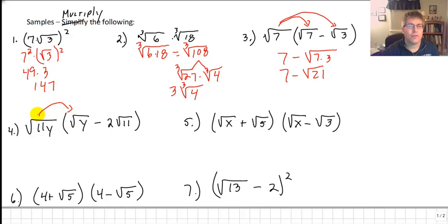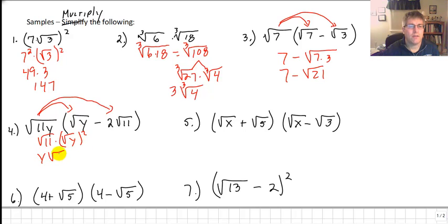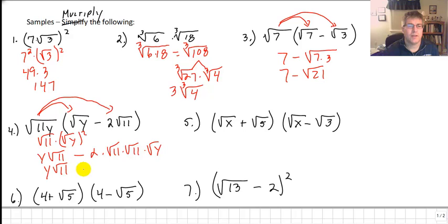Sample problem 4: we're going to distribute something a bit more complicated. We have radical 11y times radical y — that's radical 11 times radical y squared, which gives y radical 11. Then in our second multiplication we get radical 11y minus 2 radical 11, giving us negative 2 times radical 11 times radical 11 times square root of y. So we have y square root of 11 minus 2 times 11, which is 22 square root of y.